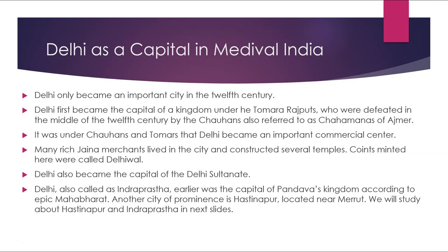Delhi as a capital in medieval India. Delhi only became an important city in the 12th century. Delhi first became the capital of a kingdom under the Tomar Rajputs, who were defeated in the middle of the 12th century by the Chauhans, also referred to as the Chahamanas of Ajmer. It was under the Chauhans and the Tomars that Delhi became an important commercial center. Many rich Jain merchants lived in the city and constructed several temples. Coins minted here were called Delhiwal. Delhi also became the capital of the Delhi Sultanate and was earlier called Indraprastha, the capital of the Pandavas' kingdom according to the epic Mahabharata. Another city of prominence is Hastinapur, located near Meerut.